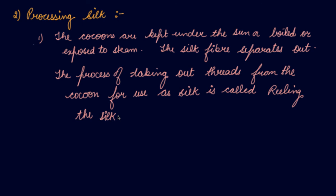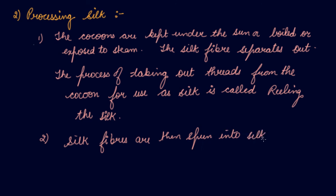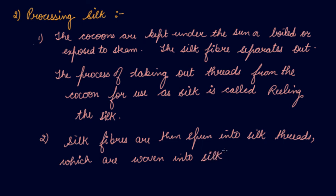Silk fibers are then spun into silk threads, which are woven into silk cloths by weavers. The silk fiber obtained by boiling the cocoon is spun into silk threads, and then weavers weave it into silk cloths. After obtaining the silk fiber, by the help of machines and the weavers, they make the silk cloths. This is how you convert the cocoon into silk cloths.